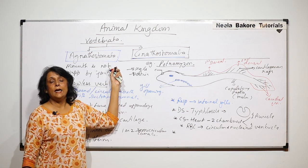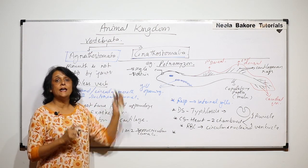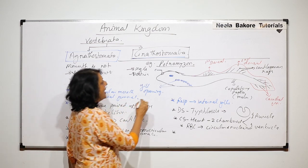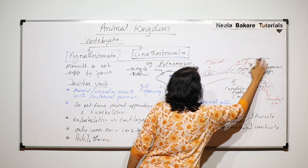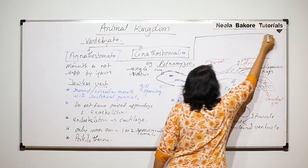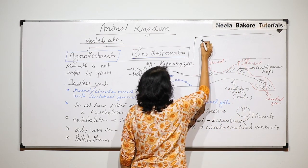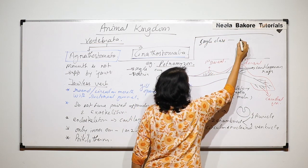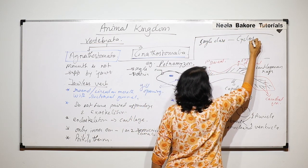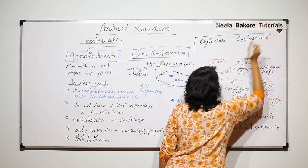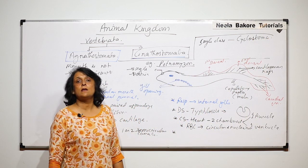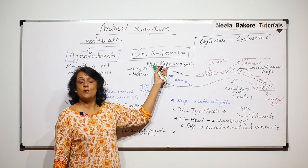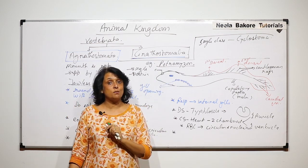Agnathostomata is divided further but there is only one class. That one class is known as Cyclostomata, sometimes also written as Cyclostomata, in which we take these examples like Petromyzon and one more which is Myxine.